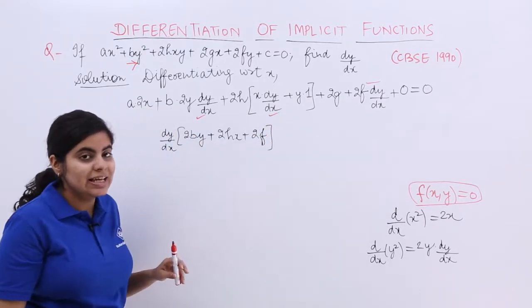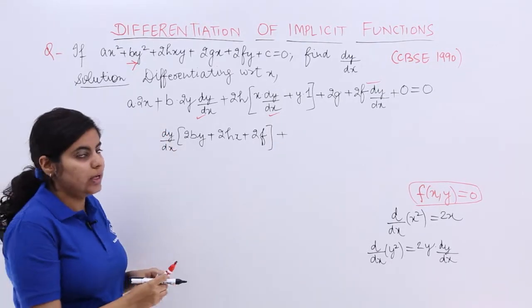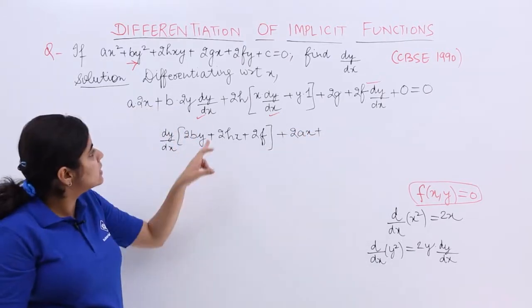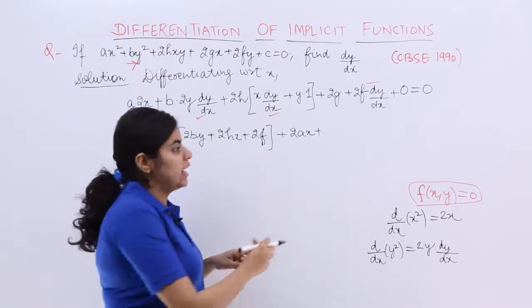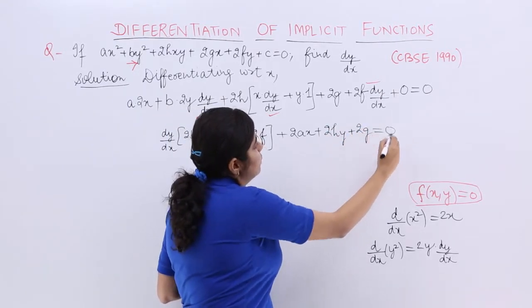Next, I have the other left out terms. So let me write it as 2ax. So plus 2ax. Then is + 2hy + 2g = 0. Because + 0 also need not be considered.